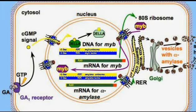cGMP binds to the DELA domain. The yellow color line shows how it moves inside the nucleus. The repressor matrix blocks the transduction of gibberellic acid MYB genes — that is, simply, MYB genes.